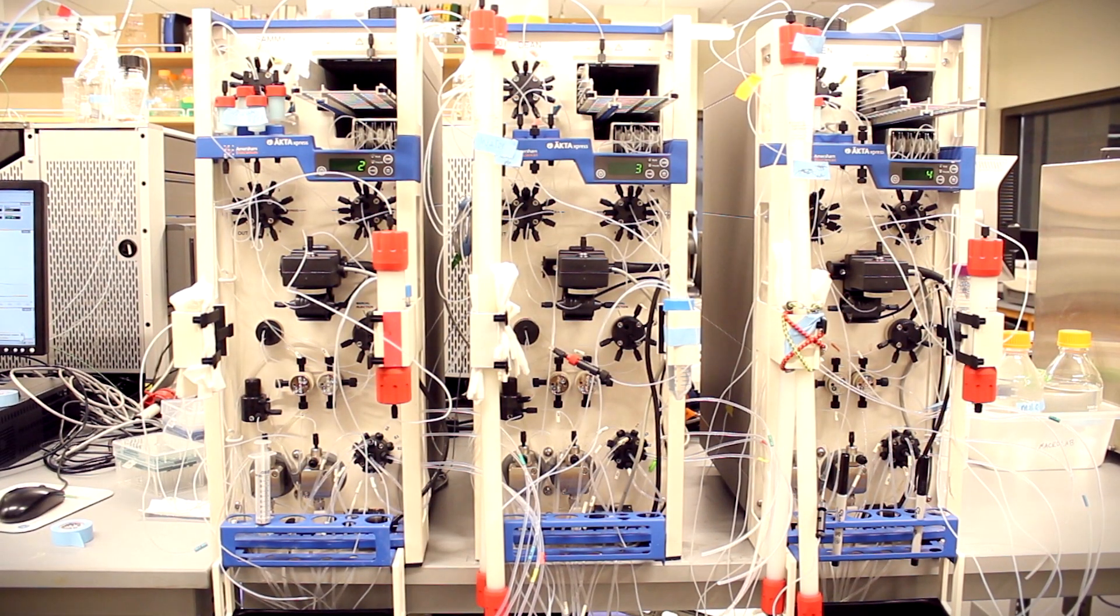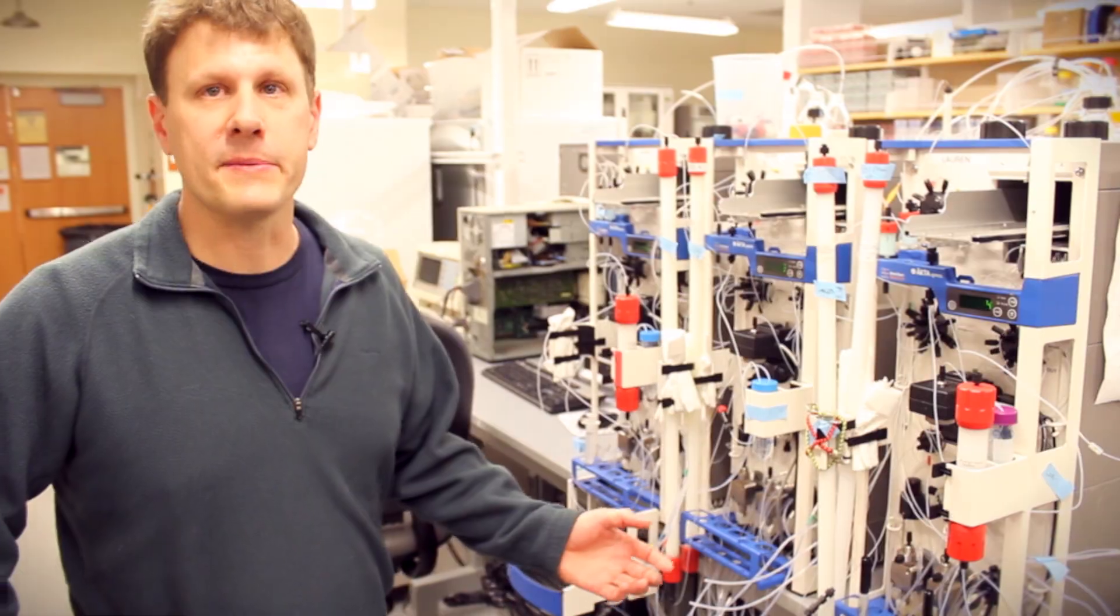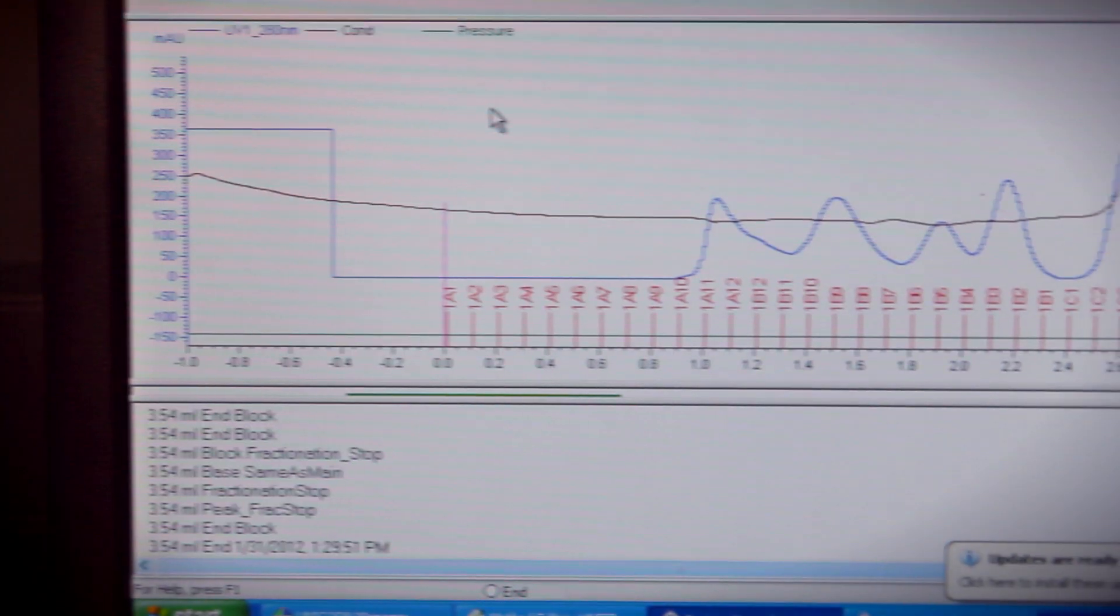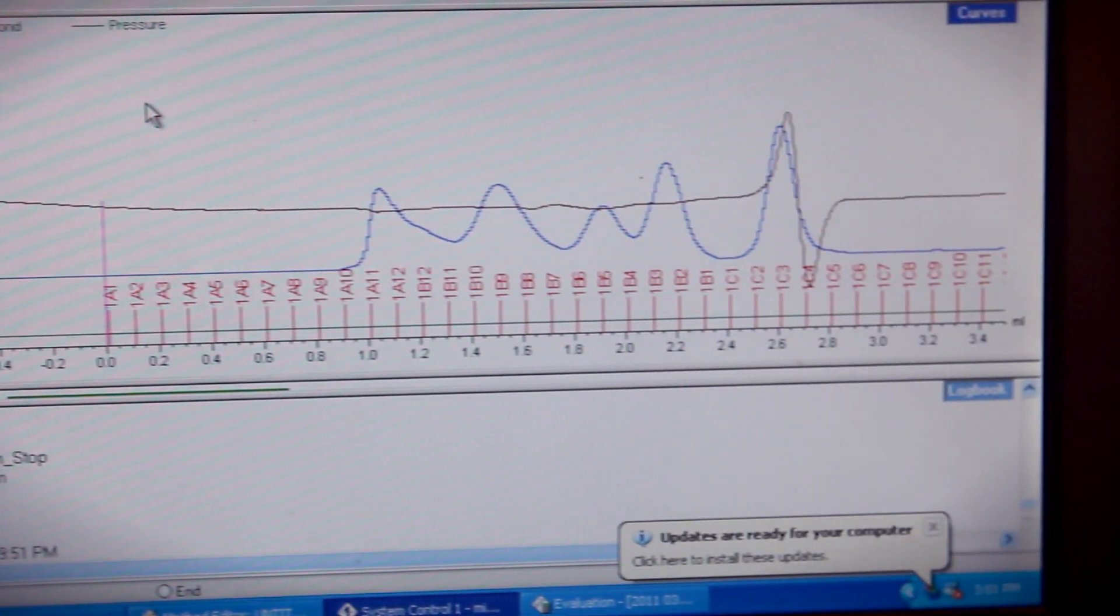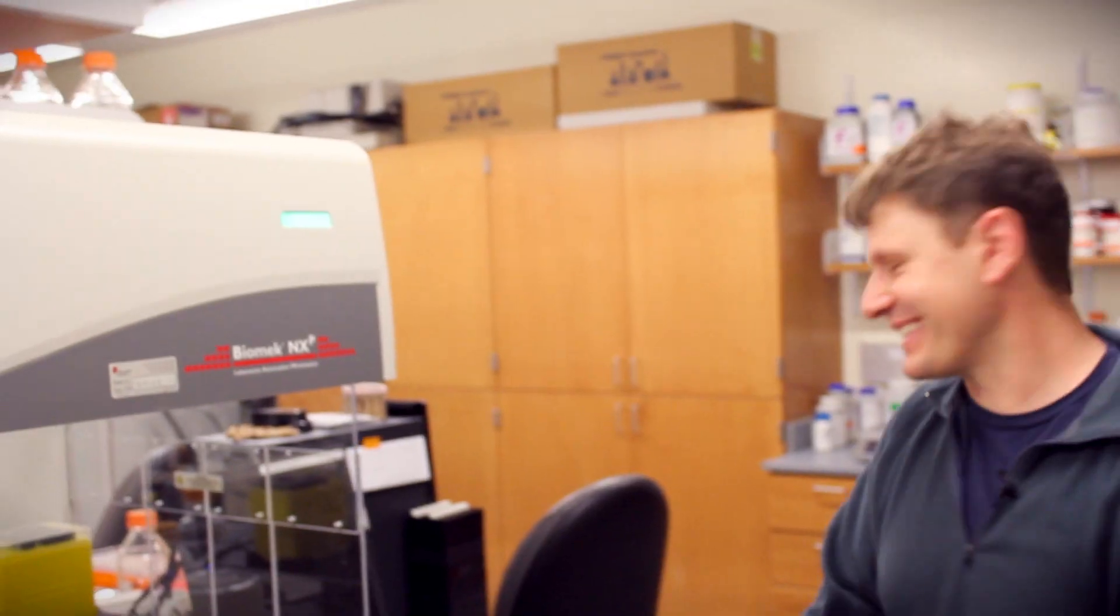These are high throughput FPLCs. It's able to put your protein over several columns. So that's kind of how we can do large-scale protein purification. We do have robots to take away the monkey work. That's nice.